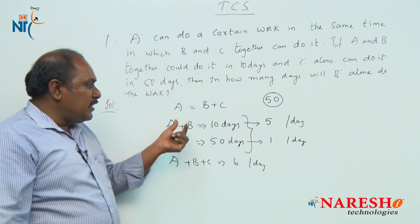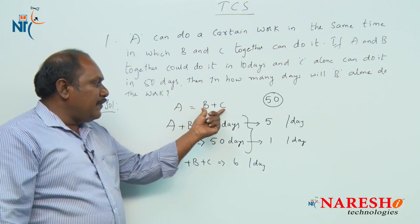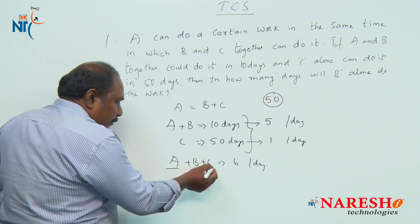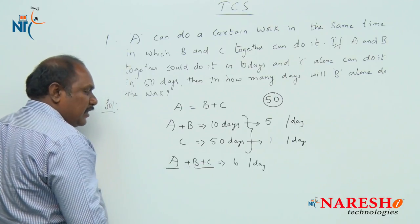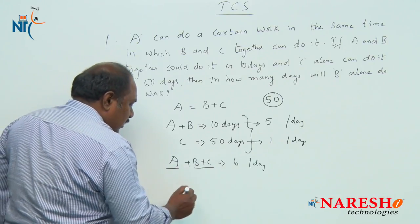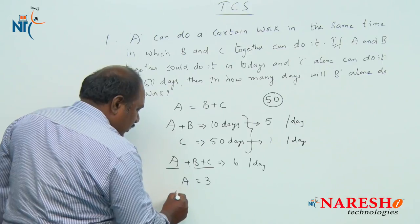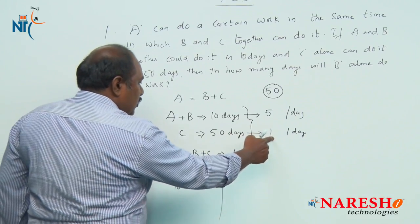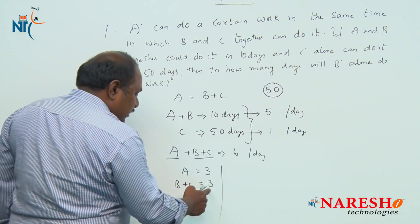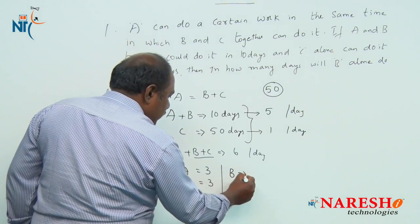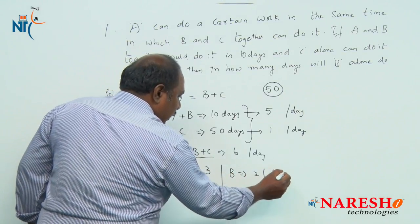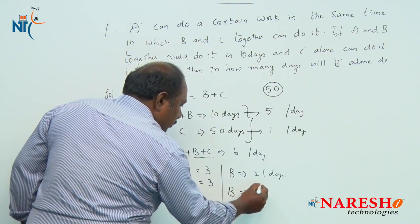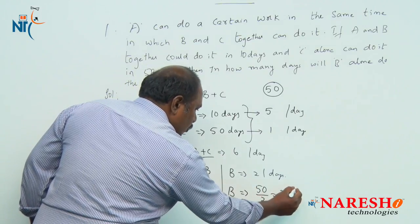Since A is equally efficient as B and C together, whatever work A does in a given time, B and C together should do the same work in the same time. So A eats 3 chocolates per day and B and C together eat 3 chocolates per day. We already know C eats 1 chocolate per day, so B eats 2 chocolates per day.